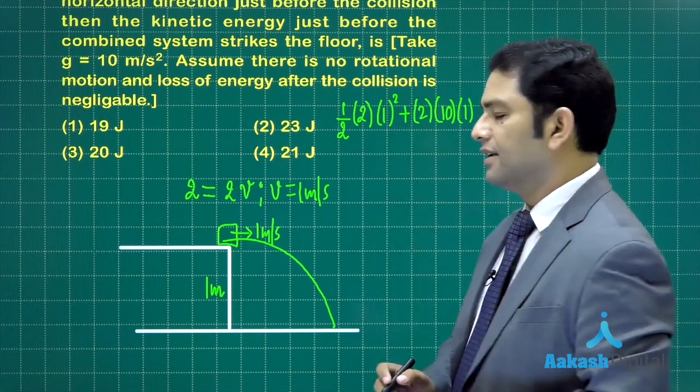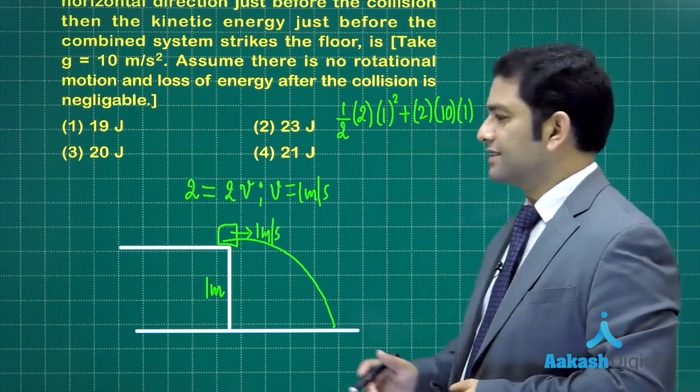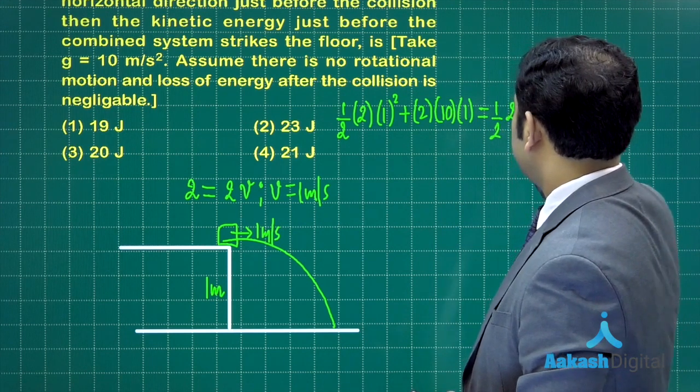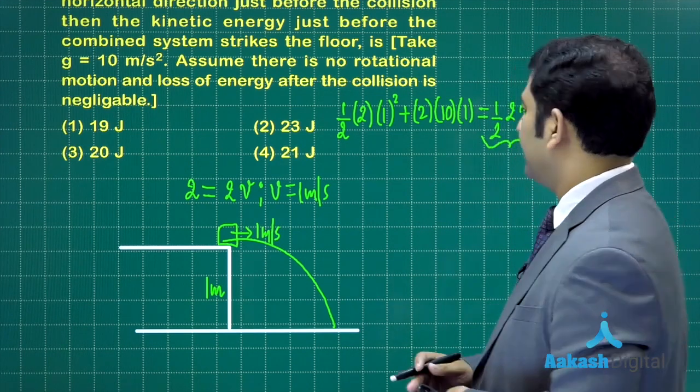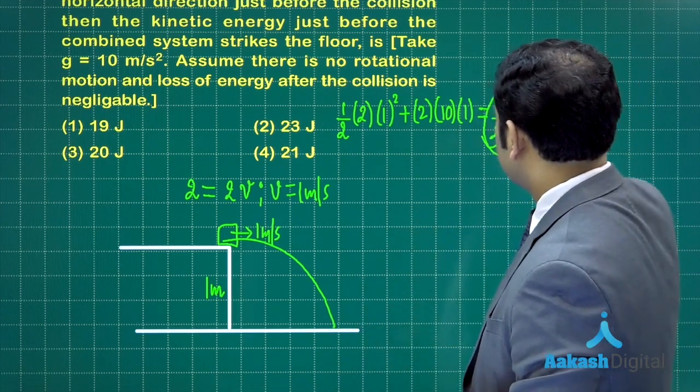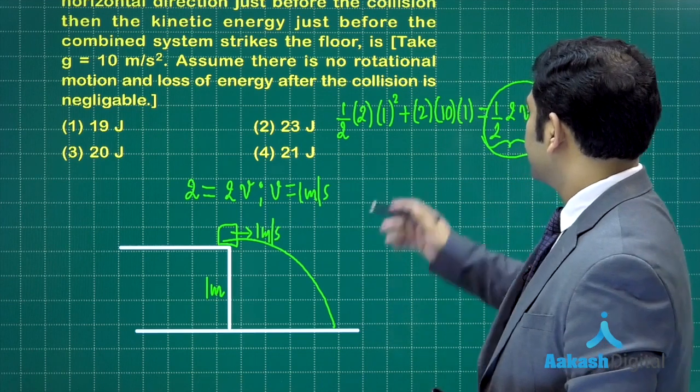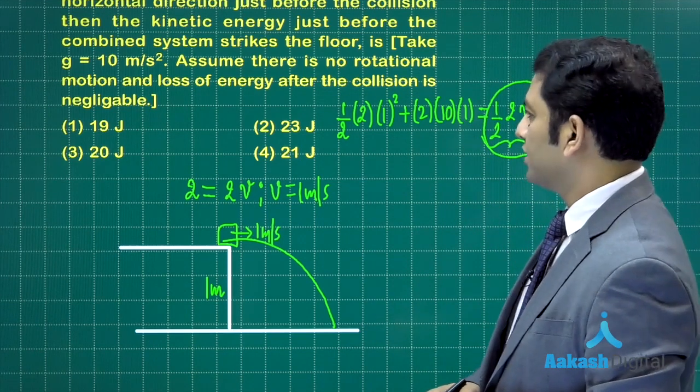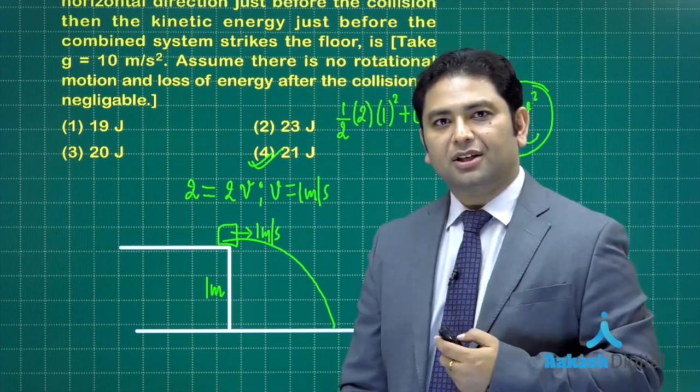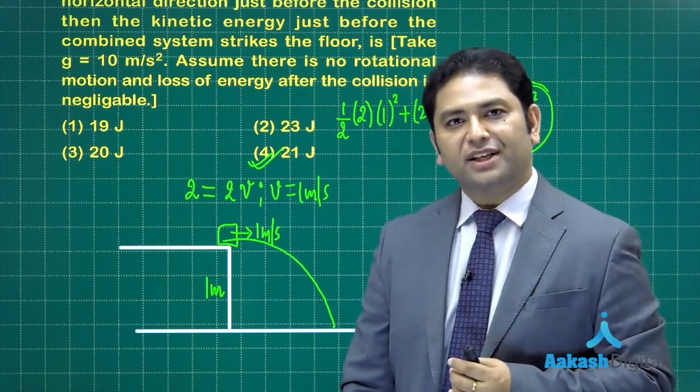That's the initial mechanical energy, and this equals one half mass times v square, which is the final kinetic energy we need to calculate. This is 20 plus 1 equals 21 joule. Option number 4 is the correct one.